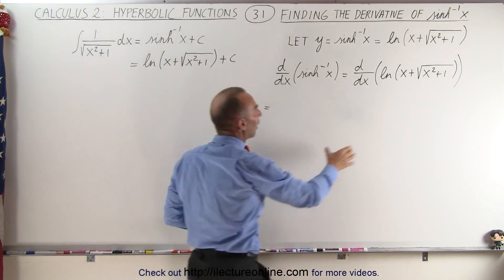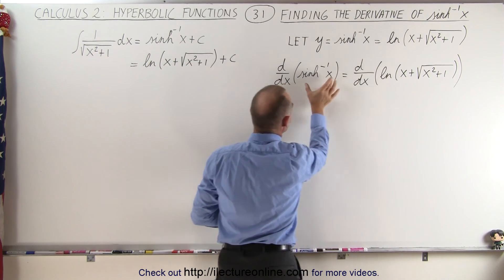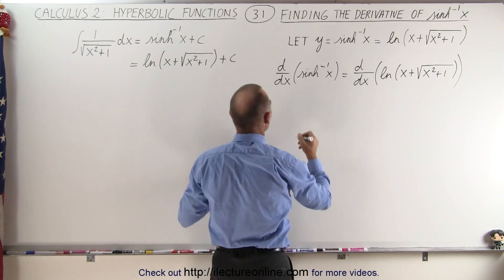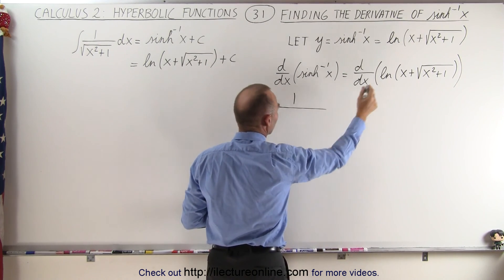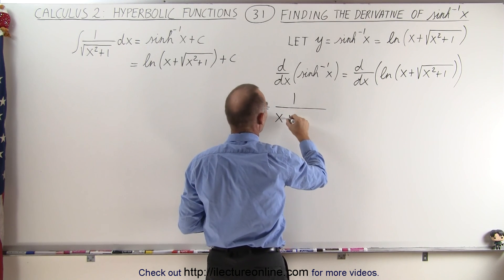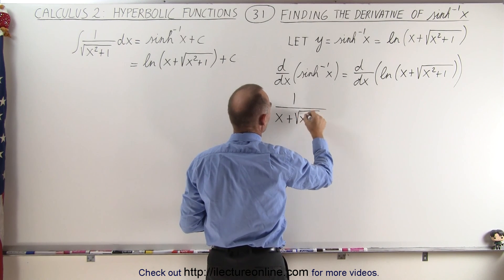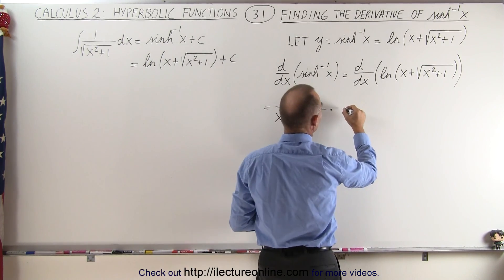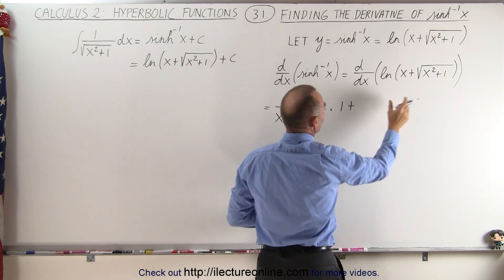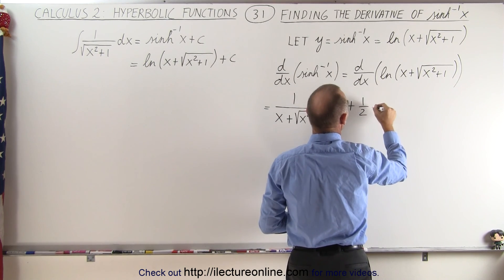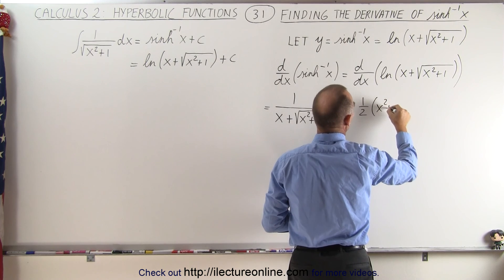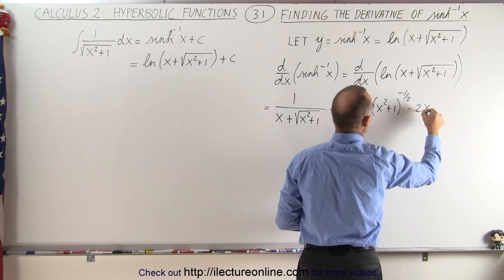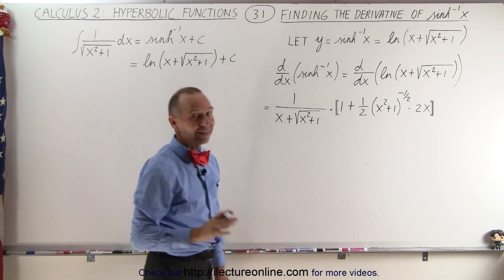Let's go ahead and take the derivative of this, which is really the same thing as taking the derivative of the inverse hyperbolic sine. The derivative of the natural log equals 1 over the quantity in the parentheses — that would be x plus the square root of x squared plus 1 — times the derivative of that. The derivative would be 1 plus one-half times x squared plus 1 to the minus one-half power, times the derivative of what's inside, which is 2x.